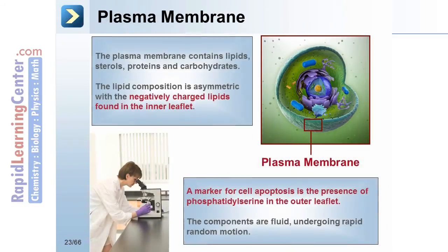The plasma membrane contains lipids, sterols, proteins, and carbohydrates. The lipid composition is asymmetric, with the negatively charged lipids found in the inner leaflet. A marker for cell apoptosis is the presence of phosphatidylserine in the outer leaflet. The components are fluid, undergoing rapid, random motion.